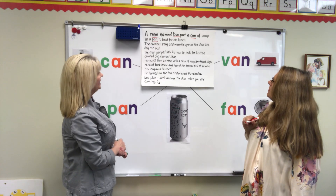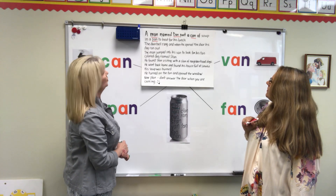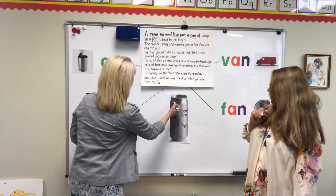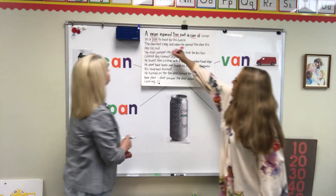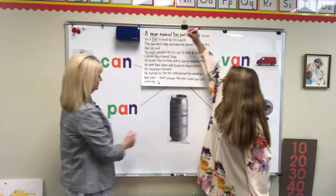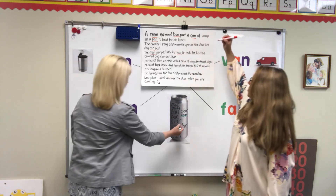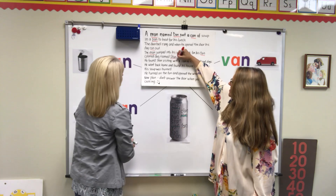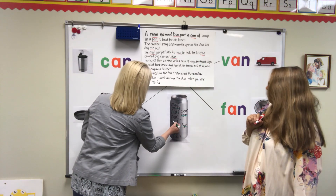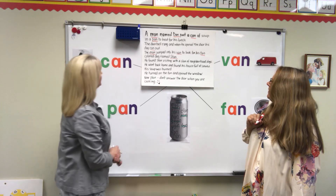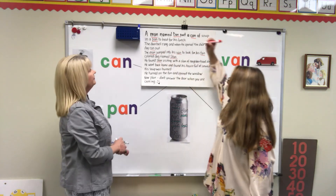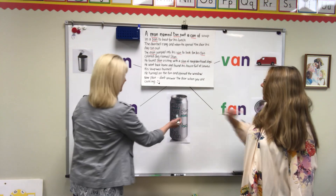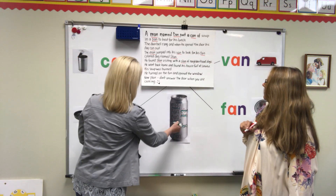The doorbell rang and when he opened the door, his dog ran out. Ran — here's ran. The man jumped into his van to look for his tan-colored dog named Stan. So I need to cross out tan and Stan — I already did van. He found Stan visiting with a clan of neighborhood dogs. Cross out clan — we already crossed out Stan.